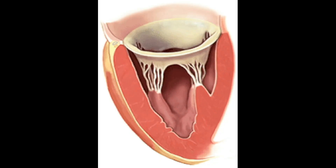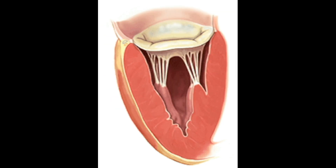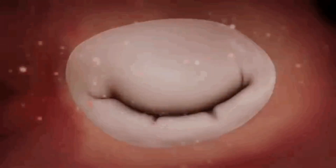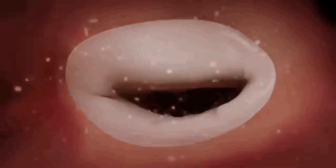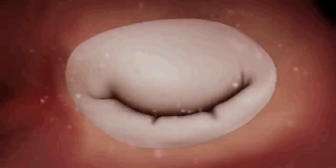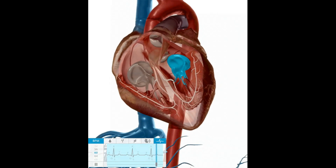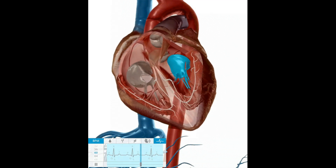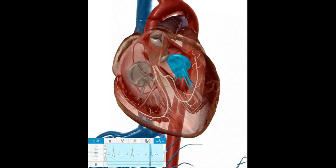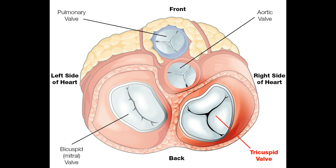The first one is the Eustachian wall. It is located at the opening of the inferior vena cava. During embryonic life, it guides the inferior vena cava blood to the left atrium through the foramen ovale.